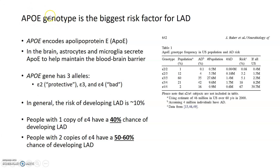APOE genotype is so far the biggest genetic risk factor that's been identified for developing sporadic or late onset Alzheimer's disease. APOE is the gene that encodes an apolipoprotein called apolipoprotein E, or APOE. Apolipoproteins are proteins that basically bind to and help transport cholesterol and other lipids in the blood.